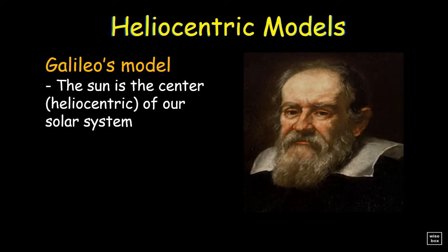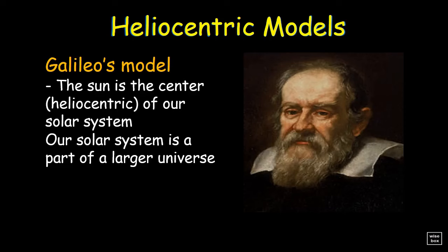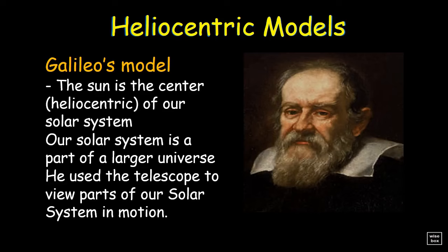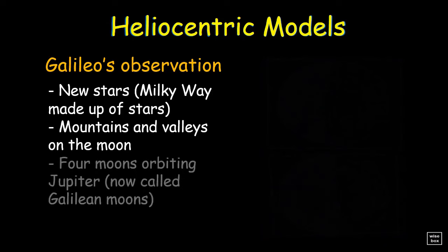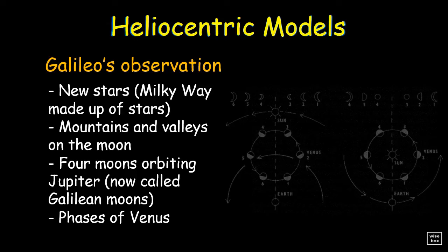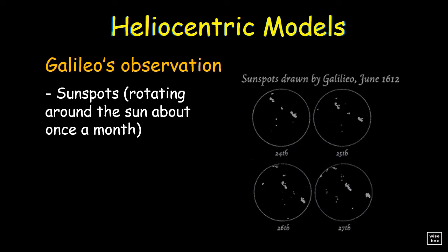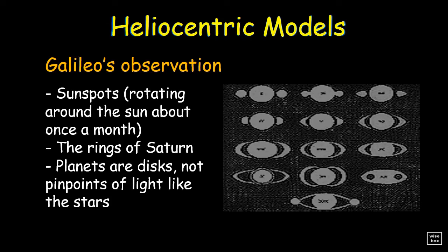In Galileo's model, the Sun is the center of our Solar System. Our Solar System is a part of a larger universe. Using a new invention, the telescope, Galileo was able to view parts of our Solar System in motion. Here are Galileo's observations: new stars, the Milky Way is made up of stars, mountains and valleys on the Moon, four moons orbiting Jupiter now called Galilean moons, phases of Venus, sunspots which are rotating around the Sun about once a month, the rings of Saturn, and that planets are disks, not pinpoints of light like the stars.